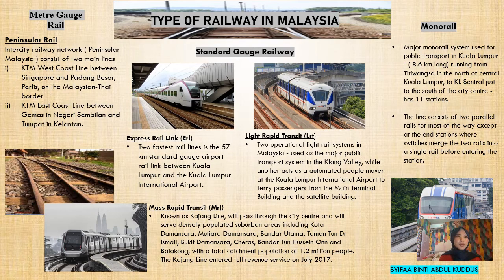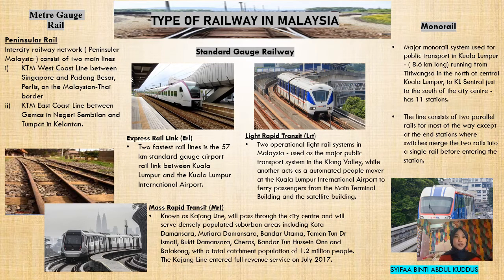There are three types of railway in Malaysia. The first one is Metre Gauge Rail. Peninsula Rail, which is an intercity railway network, consists of two main lines. The first is KTM West Coastline between Singapore and Padang Besar on the Malaysian-Thai border. The second is KTM East Coastline between Gemas in Negeri Sembilan and Tumpat in Kelantan.